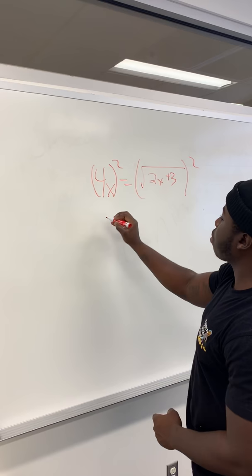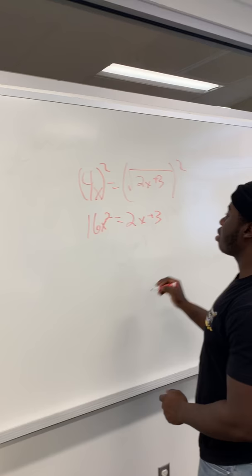So this will leave you with 16x squared equals 2x plus 3.